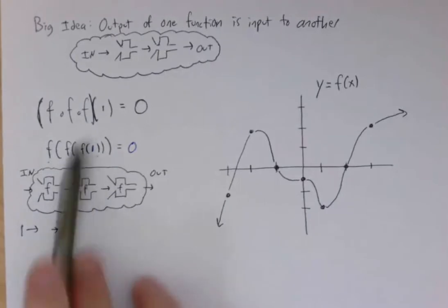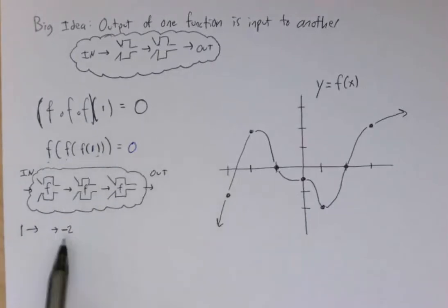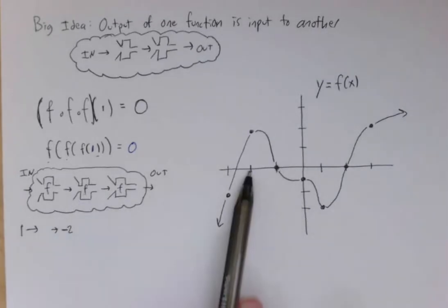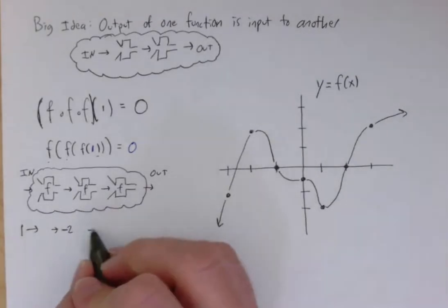So that was what's f of 1. Now what if that becomes the input again to the f function? So I'll go to negative 2 as my input. And the output I see is positive 2. Okay.